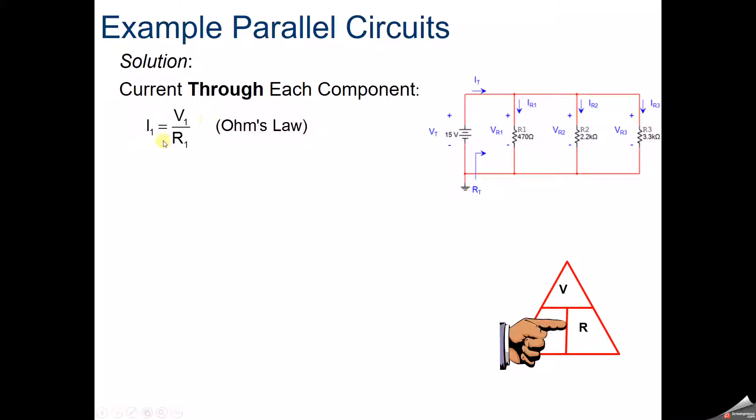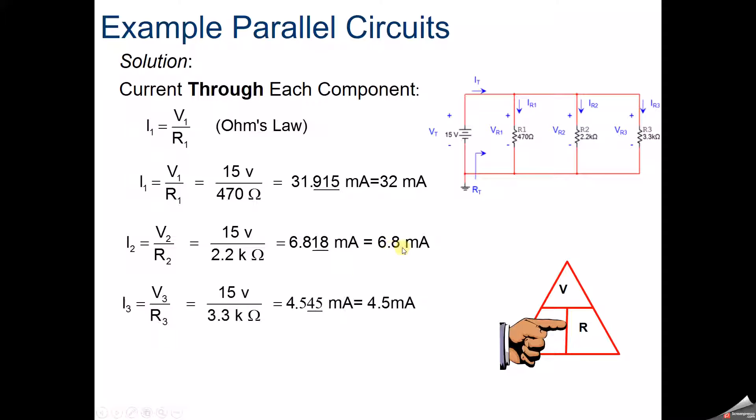So V equals IR, so I equals V over R. So the voltage at resistor 1 is 15, the resistance is 470 ohms, 15 divided by 470. Move that decimal place three times, which gives us our milliamps, so we've got about 32 milliamps. Do the same thing at resistor 2, total voltage over 2.2K, move that decimal place three times, we've got 6.8 milliamps. Same thing at resistor 3, we've got 4.5 milliamps.